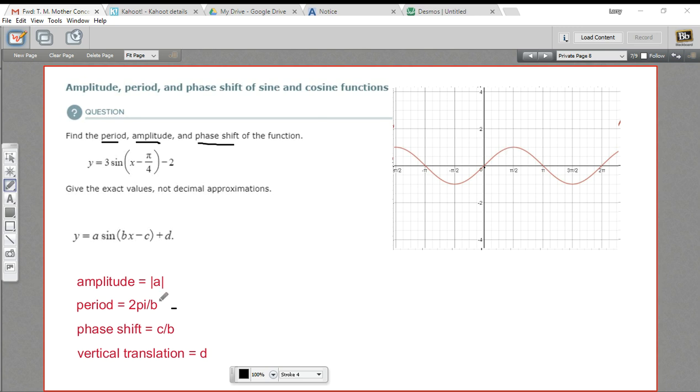All of these things we can determine from this general form: y = a sin(b(x - c)) + d. In this general form, the absolute value of a is the amplitude. So this number that's multiplied outside the sine function gives us the amplitude. In this case, it's positive 3, so our amplitude is 3.